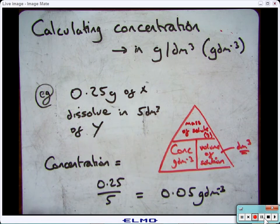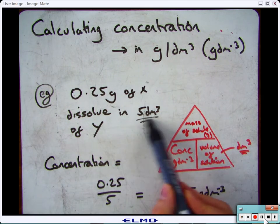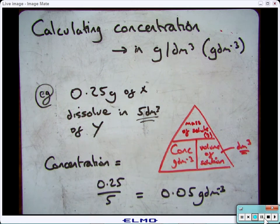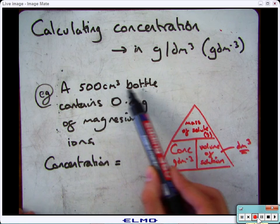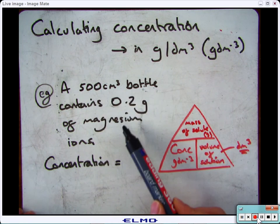The only slightly tricky bit about this is sometimes it won't give you it in decimetre cubed. Sometimes you'll have to convert it. So here it says we've got a 500 centimetre cubed bottle that contains 0.2 grams of magnesium ions dissolved.